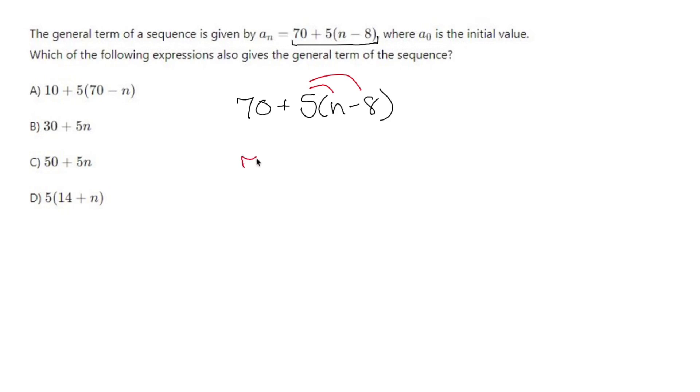Let's distribute 5, so 70 plus 5n minus 40. Let's combine like terms, so 70 minus 40 is going to be 30, and I get 5n plus 30, or in this case,